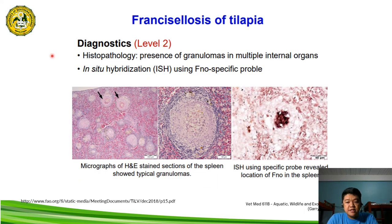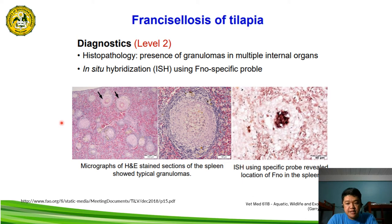Another level 2 diagnostic is histopathology, wherein there is the presence of granulomas in multiple organs. We also have in-situ hybridization (ISH) using an FNO-specific probe. Here is the histopathology of the spleen of tilapia infected with francisellosis — a micrograph of H&E stained sections of the spleen showing typical granulomas in the spleen of infected tilapia.